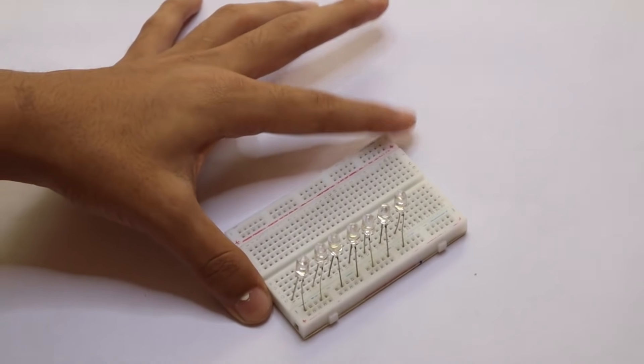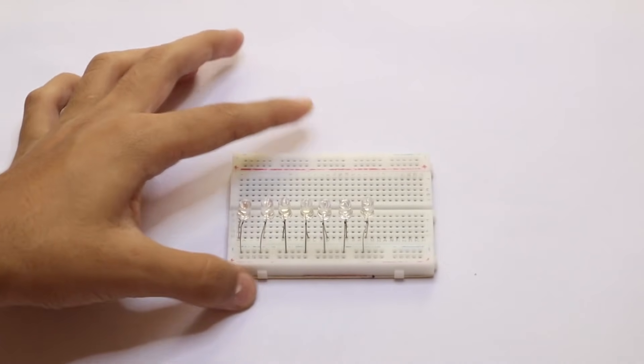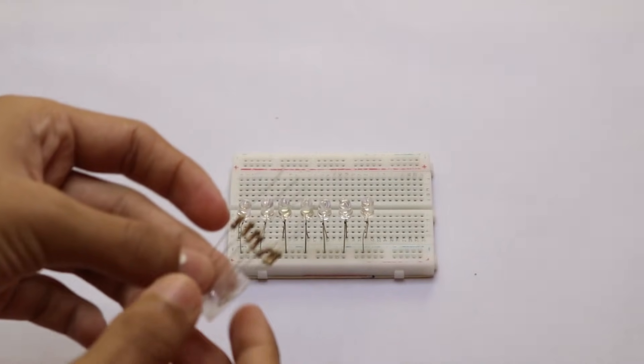Now you can see I have finished putting the LEDs. Now the next step is to put your resistors.